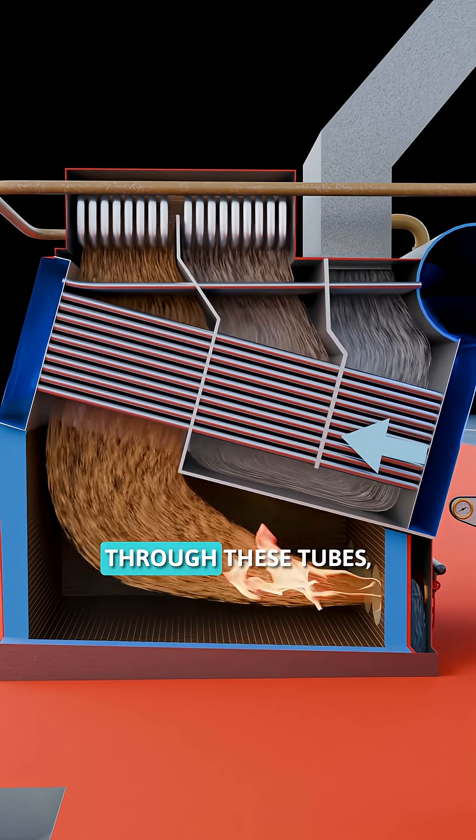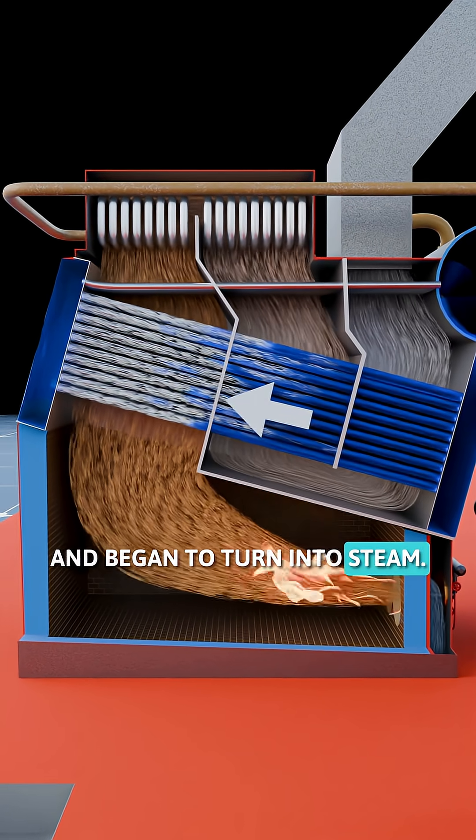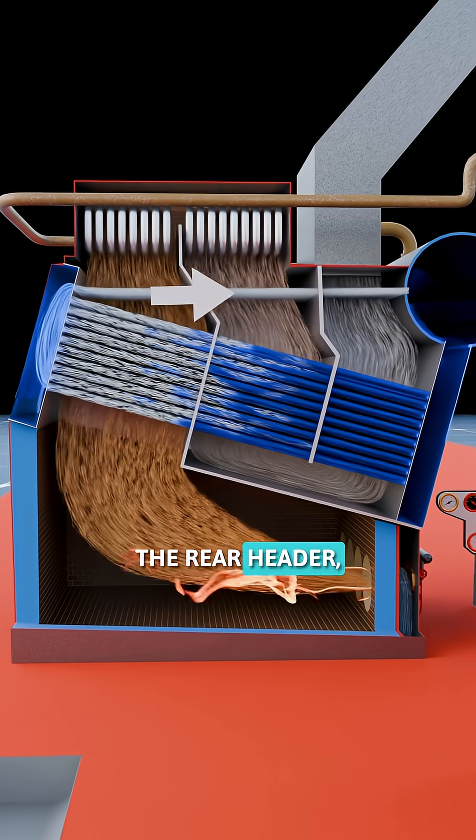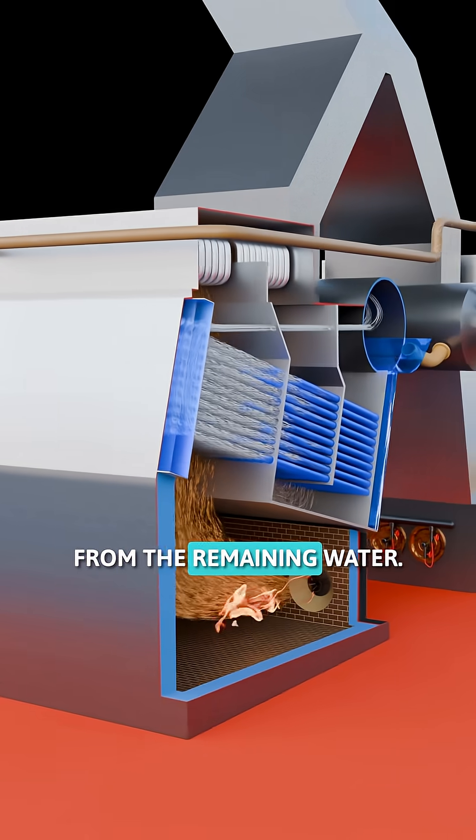As the water moved through these tubes, it absorbed heat from the combustion gases and began to turn into steam. The resulting steam-water mixture flowed into the rear header, then back into the steam drum where steam was separated from the remaining water.